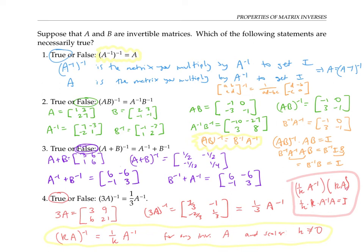To summarize: if A is invertible, then A inverse is also invertible and its inverse is A. If A and B are invertible, then A times B is invertible and its inverse is B inverse times A inverse. And if A is invertible, then k times A is invertible for any non-zero scalar k, and its inverse is one over k times A inverse.